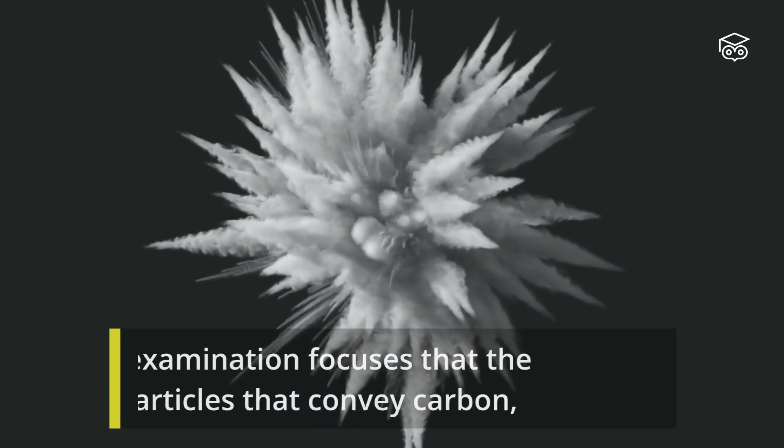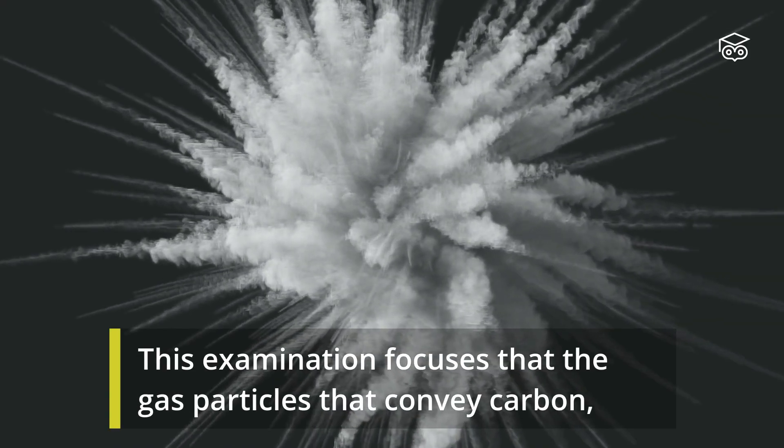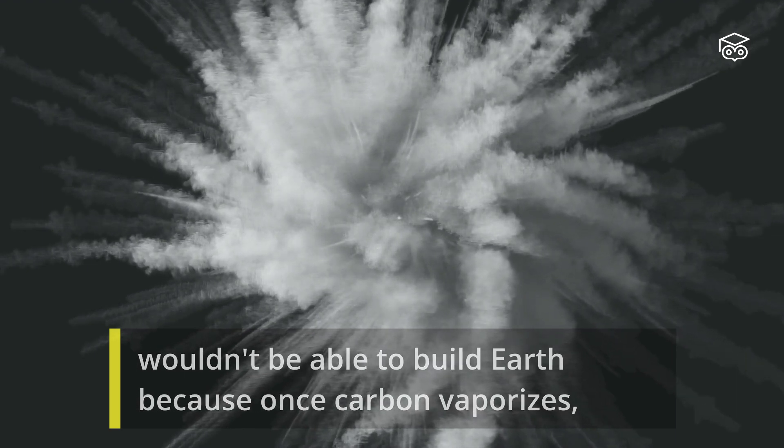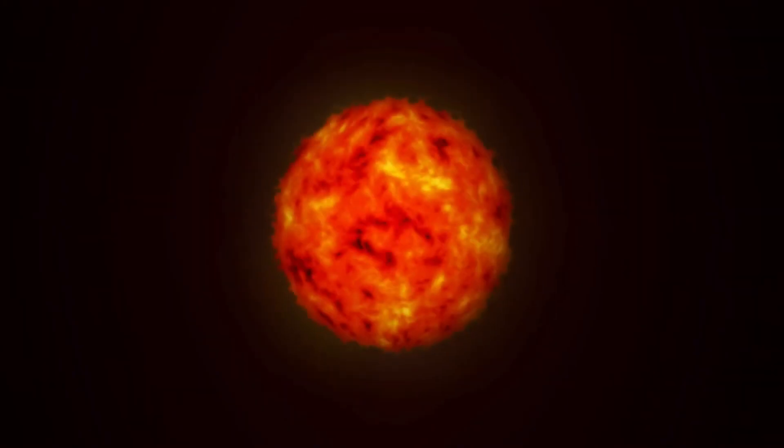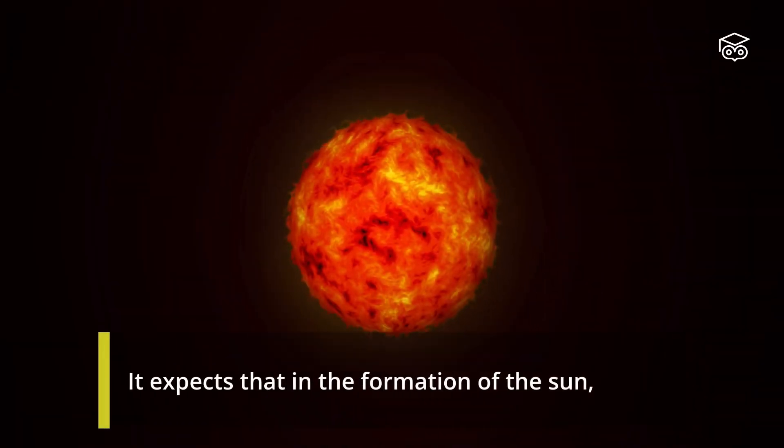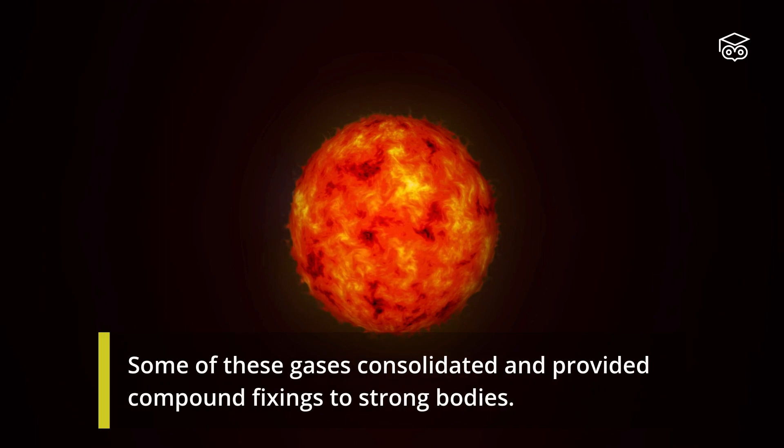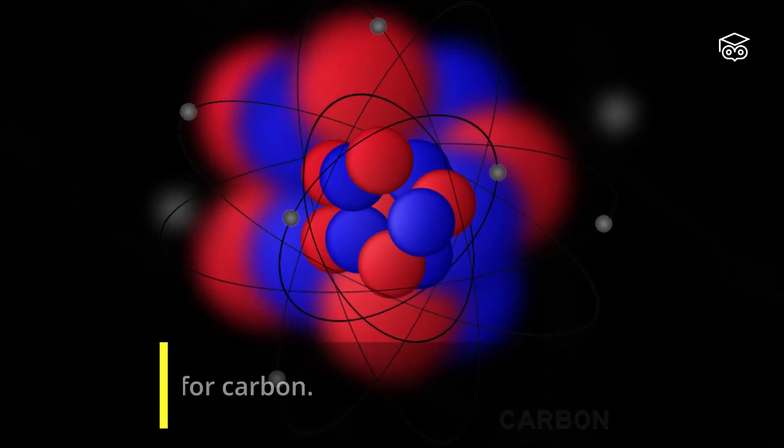This examination focuses that the gas particles that convey carbon wouldn't be able to build Earth because once carbon vaporizes, it doesn't condense back into solid. It expects that in the formation of the sun, the entirety of the planet's components got vaporized. Some of these gases consolidated and provided compound fixings to strong bodies. But that doesn't work for carbon.